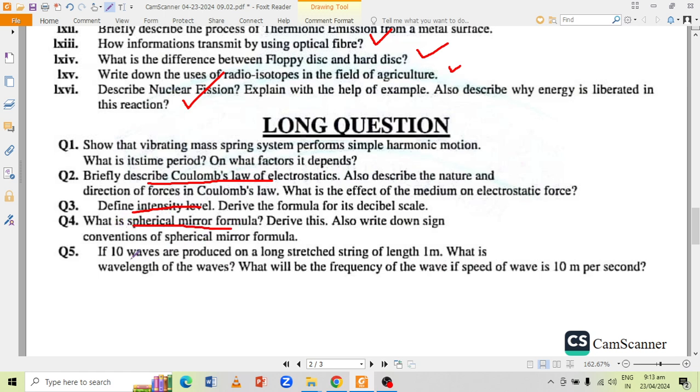If 10 waves are produced on a long stretched string of length 1 meter, what is the wavelength of the waves? What will be the frequency of the wave if the speed of the wave is 10 meter per second?